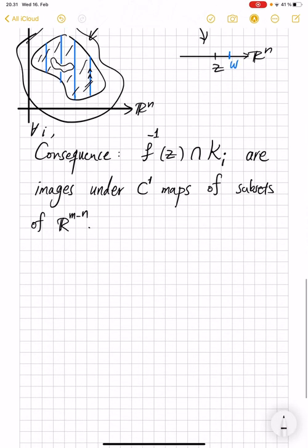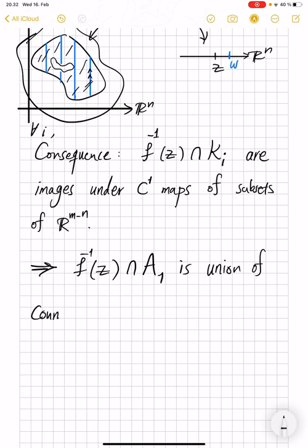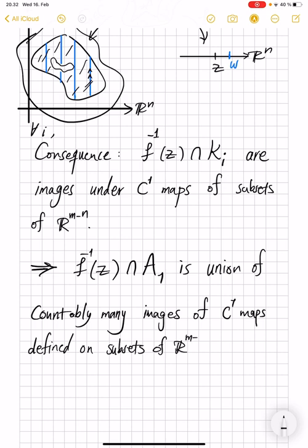f inverse of z intersection with all of A1 is union of countably many, because we only have countably many k_i's, countably many images of C^1 maps defined on subsets of R^{m-n}.